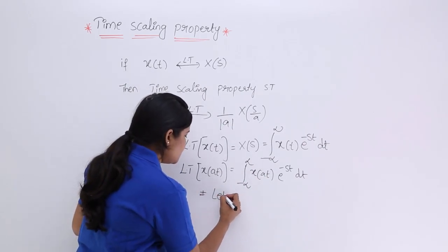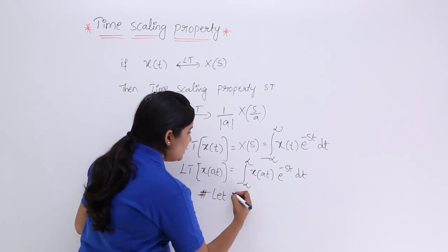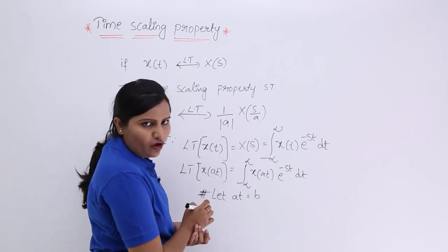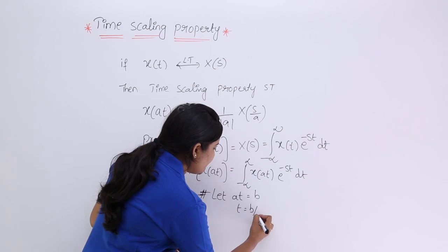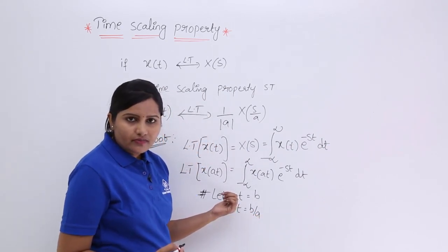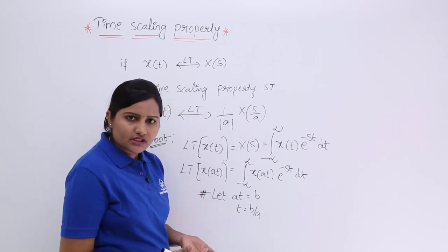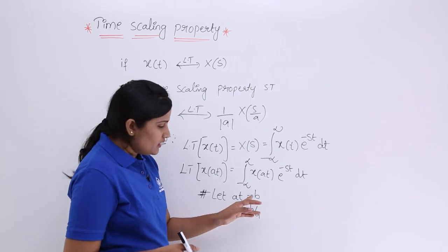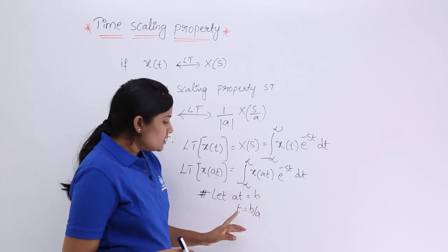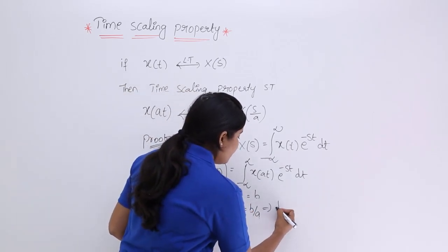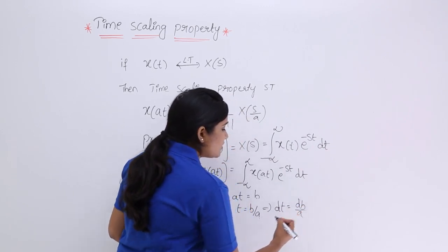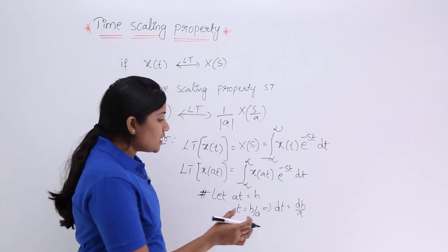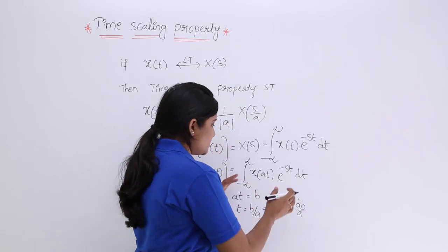Let at be equivalent to some constant b. So the scaled time is taken as a new variable b, meaning t = b/a. Here a is always a constant — the scaling factor (like 2, 3, or 4 in x(2t), x(3t), x(4t)). Since a is constant and t is a variable, t = b/a. Taking the differential on both sides gives dt = db/a, since a is constant and has no effect under differentiation.